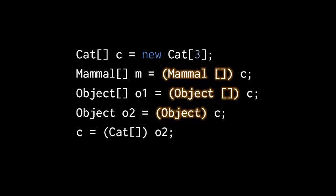However, when we take our object reference, which we know is actually holding a cat array object, we have to explicitly use a downcast to assign its value back to an actual cat array reference.